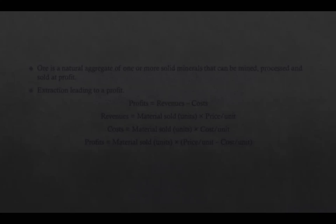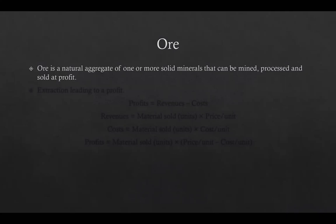The very first thing that should be clear before going into the details of mine planning is the definition of ore. There are different definitions available in the literature. One simple definition states that ore is a natural aggregate of one or more solid minerals that can be mined, processed and sold at profit. So the key concept about ore in mining is extraction that leads to a profit.